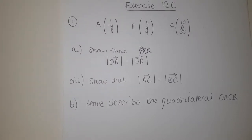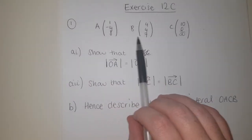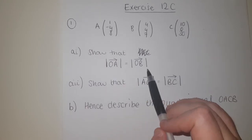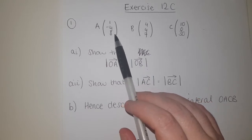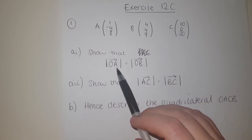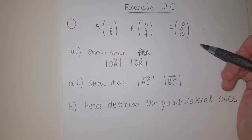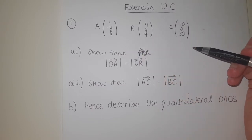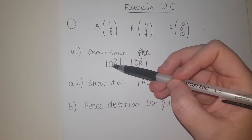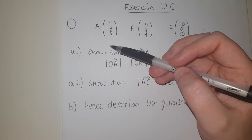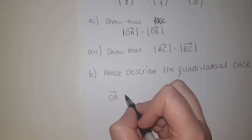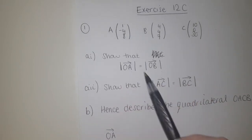If we look at this one, we've got three vectors A, B and C. We want to show that the length of OA is equal to the length of OB. These are the position vectors relative to the origin, so OA means you're going from the origin to point A. Since the origin is (0, 0, 0), when going between two points you subtract — but subtracting zero doesn't change anything. So OA is just (1, −4, 8).